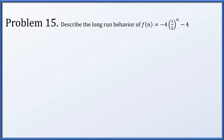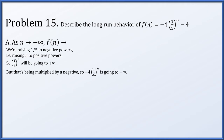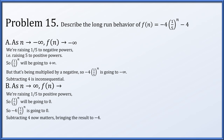Problem 15: describe the long-run behavior of f(n) = negative 4 times (1/5) to the n minus 4. As n goes to minus infinity, raising 1/5 to negative powers is like raising 5 to positive powers, so (1/5) to the n goes to plus infinity. Multiplying by negative 4 sends this to negative infinity, and subtracting 4 is inconsequential, so f(n) goes to minus infinity. As n goes to positive infinity, (1/5) to the n collapses to 0, so negative 4 times 0 is 0, and then subtracting 4 gives f(n) approaching negative 4.